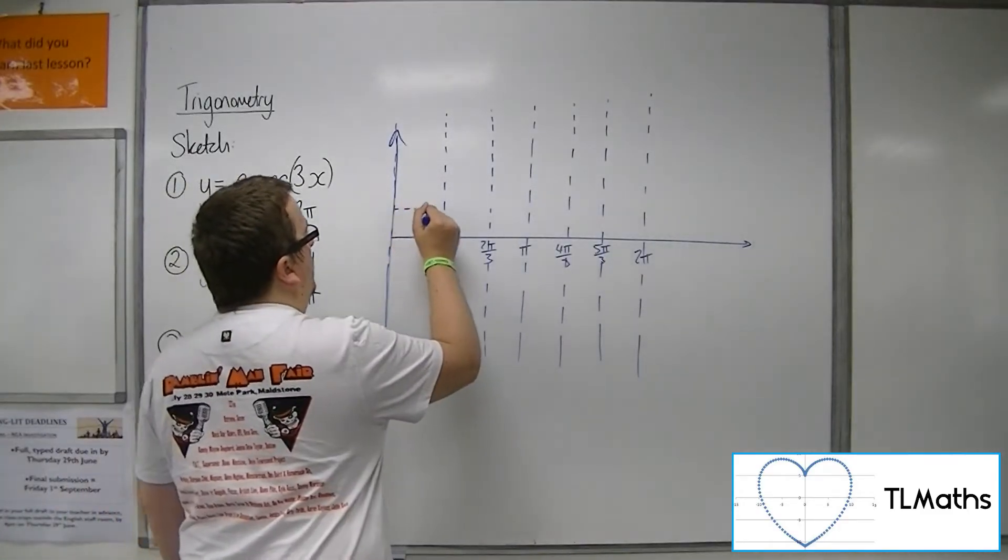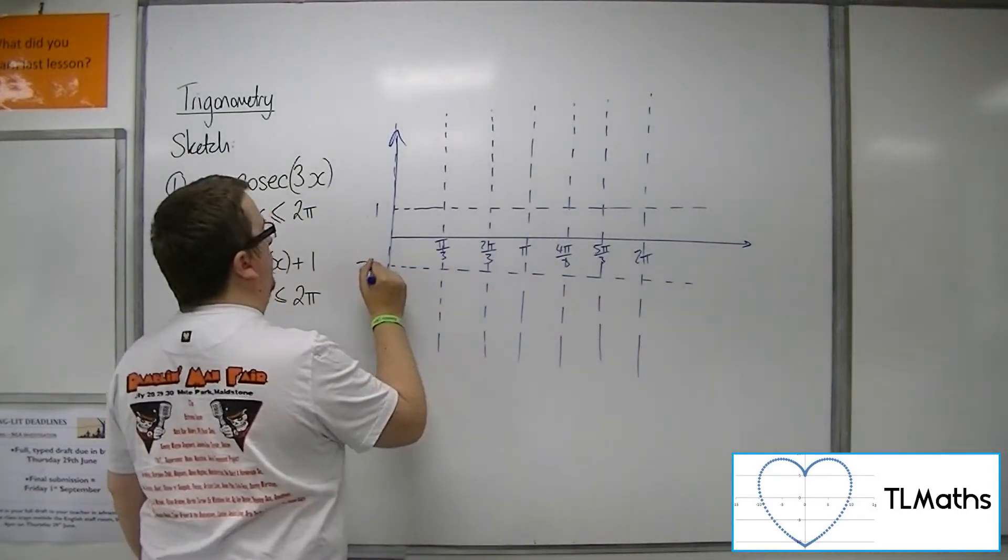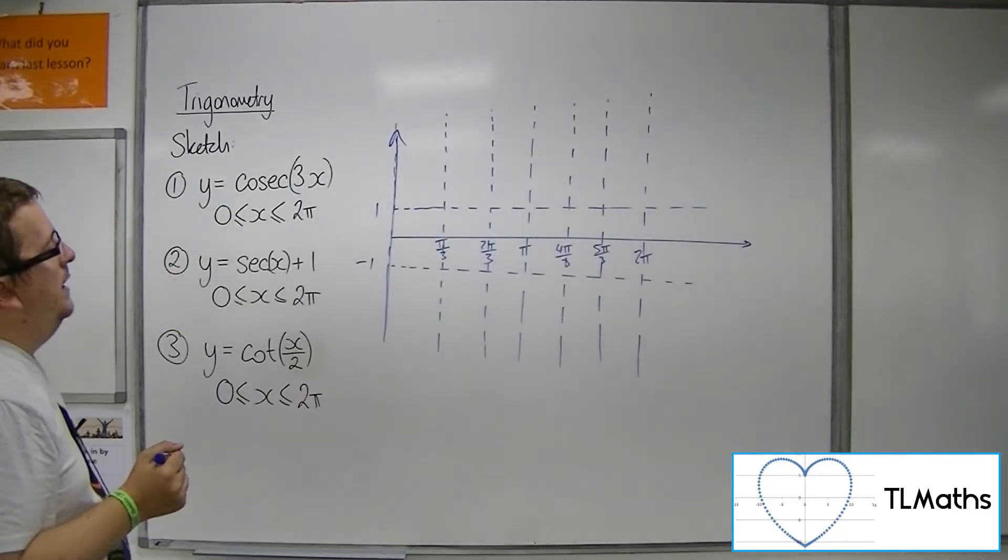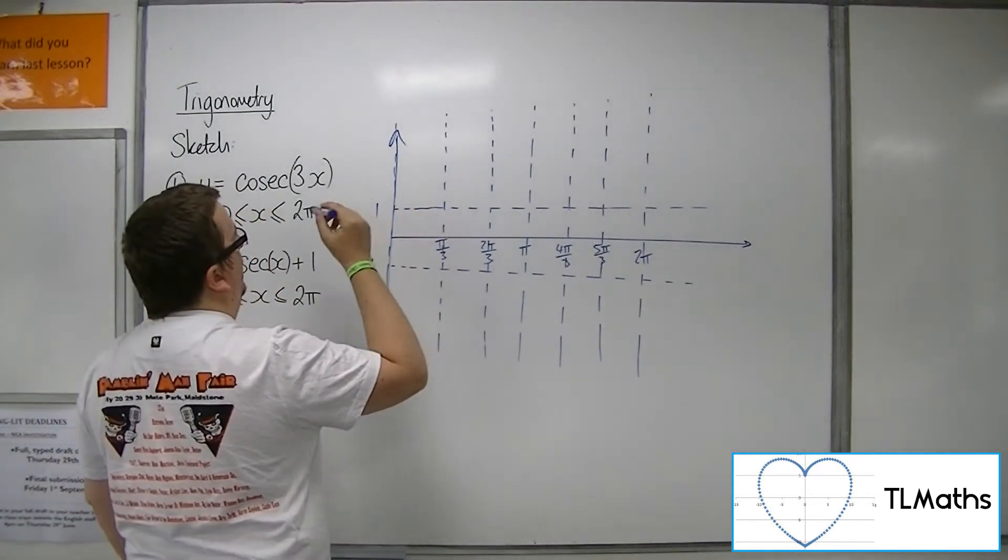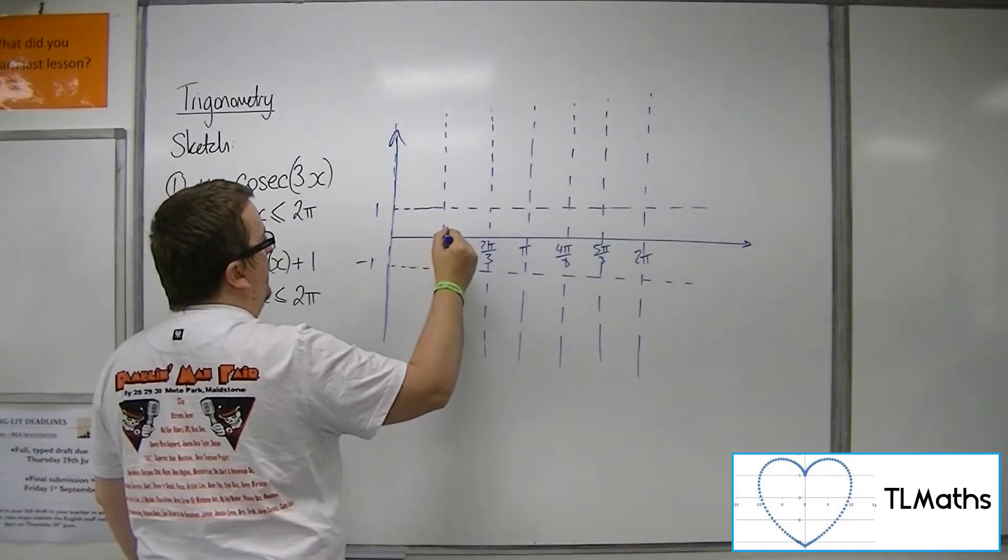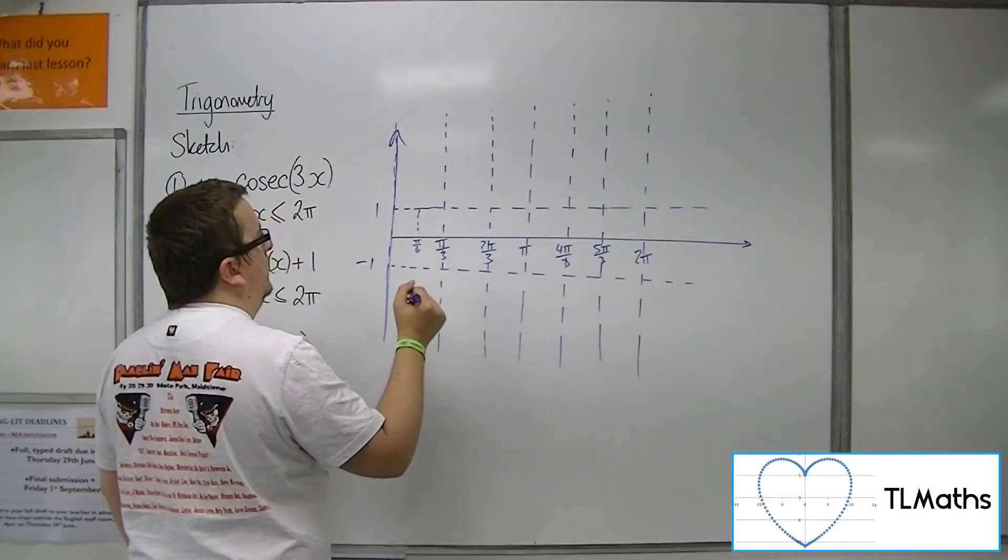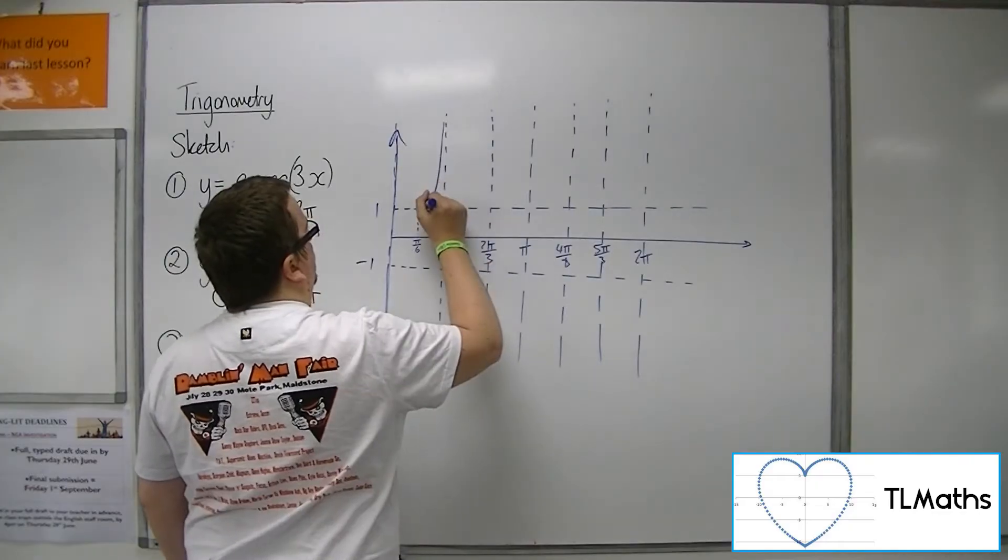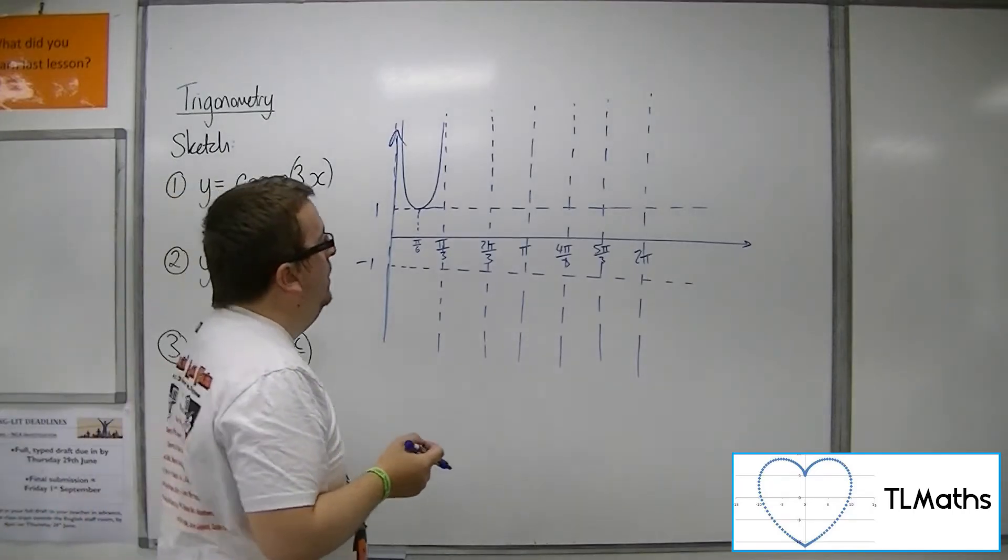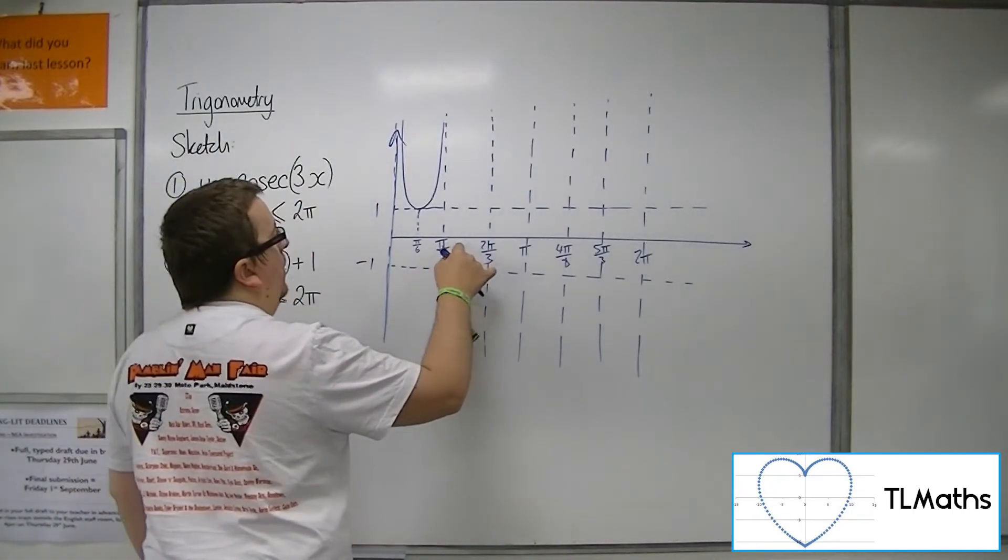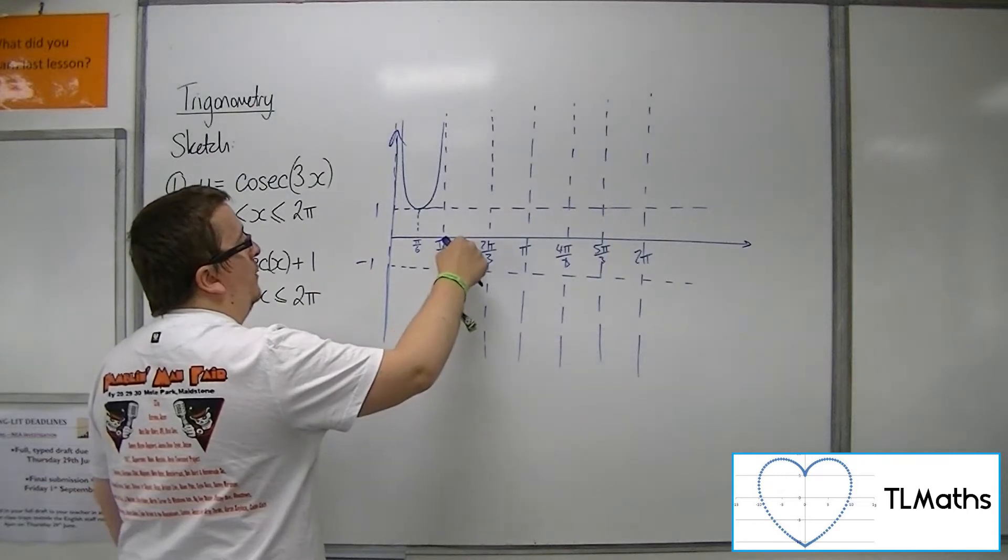Now, let's draw on a line for 1, and one for minus 1. Now, the sine curve, if it was sine of 3x, would look like this. So here would be our pi over 6. So at this point, we have our first part of the curve. Now, this gets us 2 pi over 6, so this is 3 pi over 6, or pi over 2.